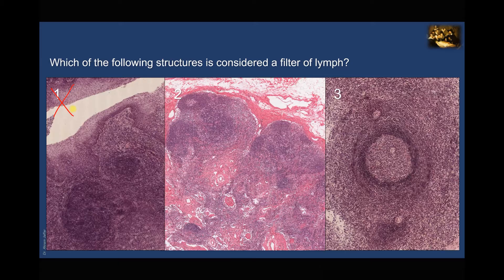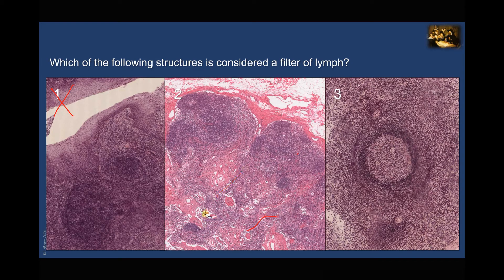If you look at slide two, this is actually a lymph node. You can see the fibrous capsule here, and there is a cortex and a medulla. The cortex is characterized by the presence of multiple nodules. One of them has a germinal center, so it's a secondary follicle. If you look at the medulla, you can see the medullary cords and these spaces — the medullary sinuses. Also, if you look at the periphery, you can see the presence of vessels — an afferent lymphatic vessel — and this one in particular is showing a valve. These valves prevent backflow of lymph. This afferent lymphatic vessel is one of multiple afferent lymphatic vessels that reach the lymph nodes.